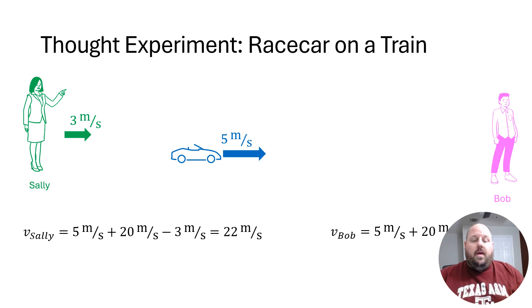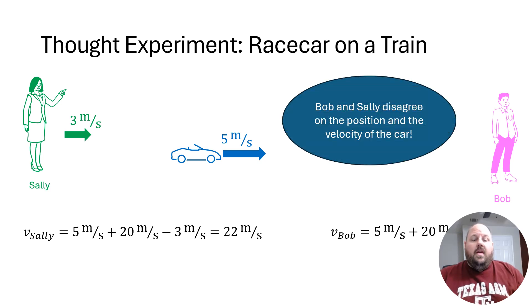So Sally and Bob, even though they may agree on the velocity when they are standing still, disagree on the velocity when they are moving relative to each other. And so in this case, they disagree on the position. Sally sees it to the right, Bob to the left. And they disagree on the velocity because Sally herself is in motion relative to Bob.